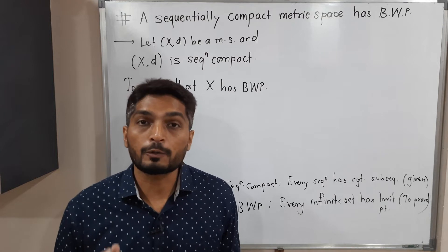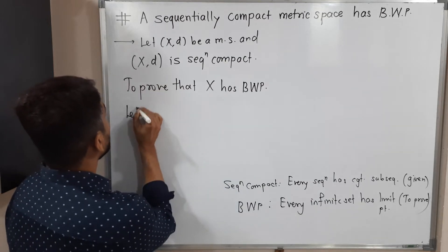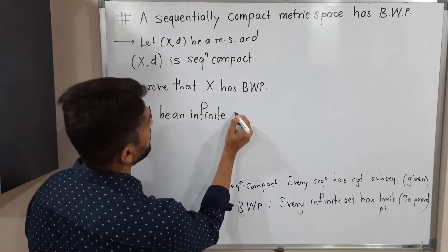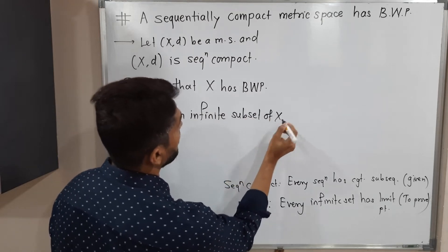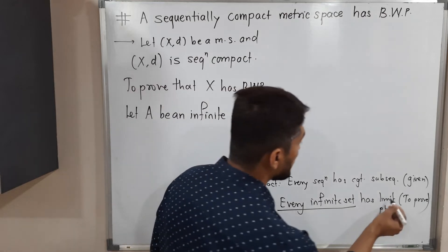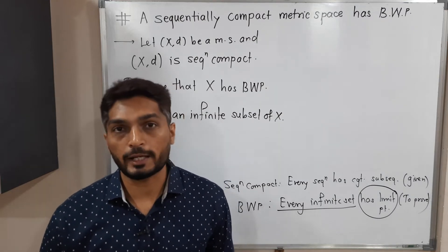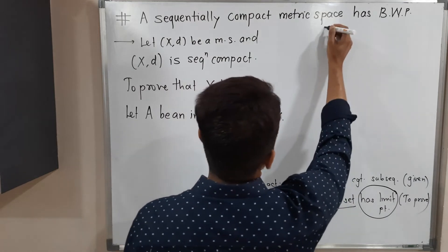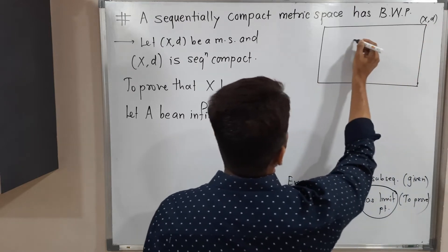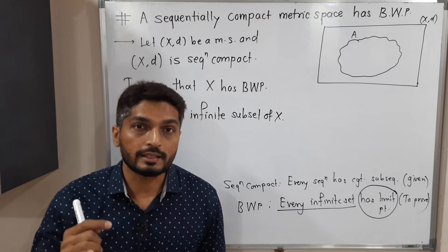To prove BWP, we need to show that every infinite set has a limit point. So let A be an infinite subset of X. Looking at the diagram: this is the metric space X, and inside it we have the infinite set A. We have to prove that A has a limit point.